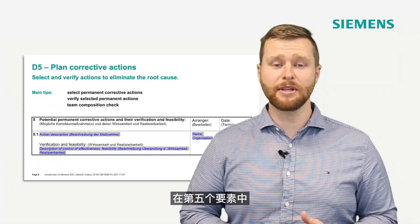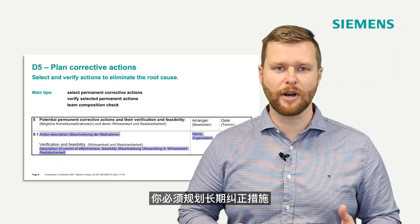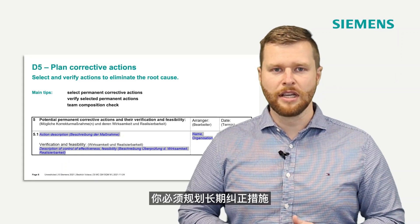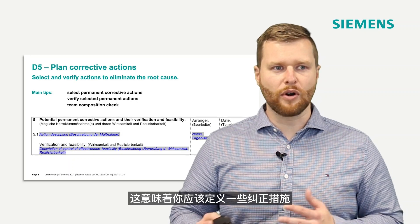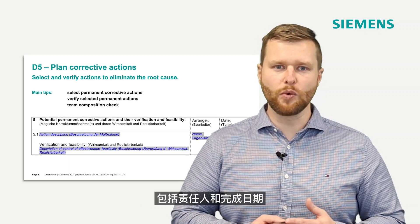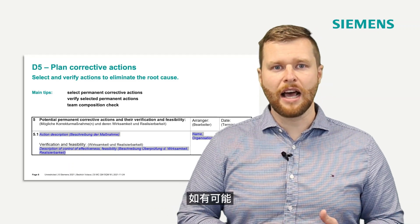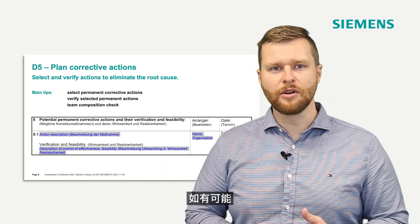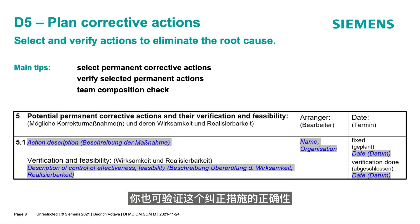In discipline number five, you have to plan the corrective actions long-term. That means you should define corrective actions including responsible persons and dates. If you have the possibility, you can also verify whether this is the right corrective action, for example by using simulations or other methods.